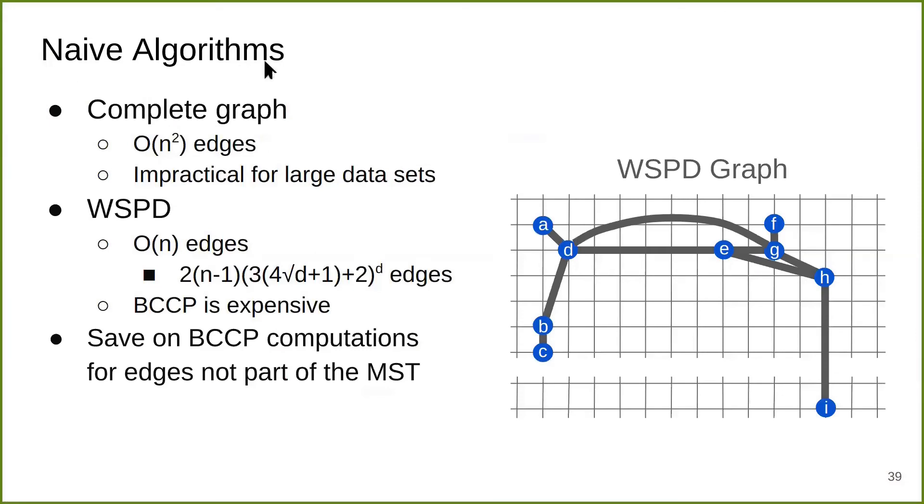Just a recap. For naive algorithms, previously we had this quadratic number of edges graph. Now with WSPD, we only have linear number of edges due to linear number of pairs, but actually this is still expensive in practice. This is because when expanded, there's a very large constant here, which is especially large when the dimensionality of the dataset is high. On the other hand, computing BCCP is also expensive.